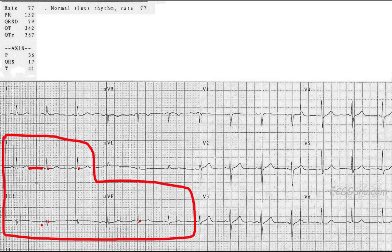If you have a tachycardia and can't see the TP segment because it's too short, your next best choice for baseline is the PR segment, which is in front of the QRS. In a normal ECG, we want to see the J point in line with the baseline or isoelectric line — not elevated and not depressed — and we're seeing that here.